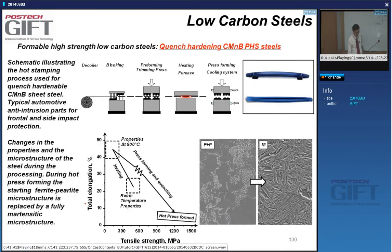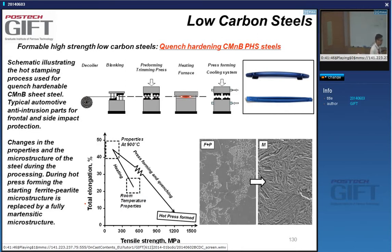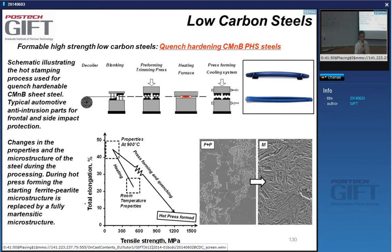Because of the martensite and retained austenite, CP grades achieve larger strengths, close to 900 MPa. Complex phase or CP grades are standardized up to 980 MPa. The trend to go beyond 980 MPa — beyond a gigapascal — has resulted in the development of ultra-high-strength grades of more than 1000 MPa, with active research into 1500 and even 2000 MPa grades that can still be formed.